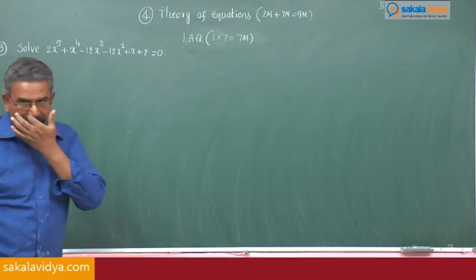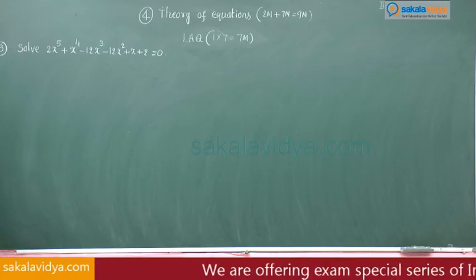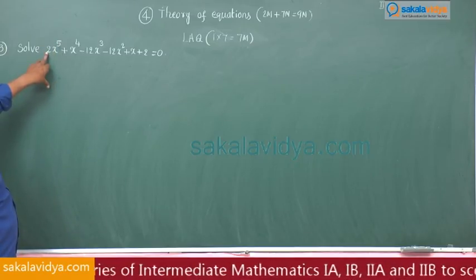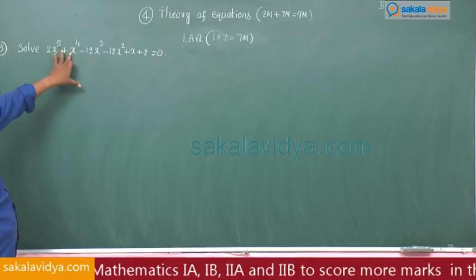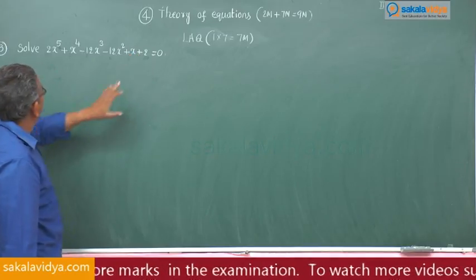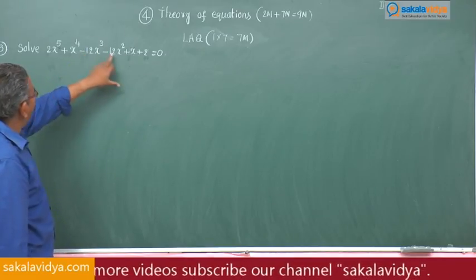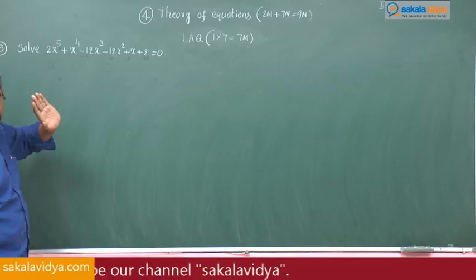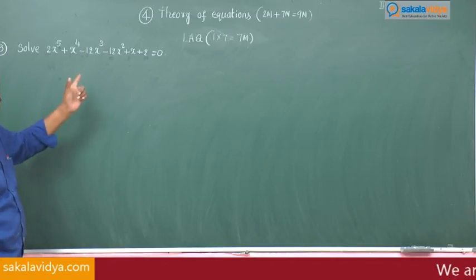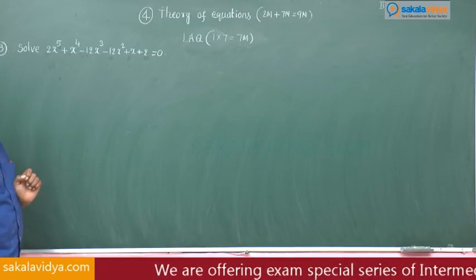Just observe this equation. If you observe, the degree is odd. Here a₀, a₁, a₂, a₃, a₄, a₅ — and aₖ is equal to aₙ₋ₖ for every k equals 0, 1, 2, 3, 4, 5, and also odd. That is why this equation is called class 2 of odd degree.